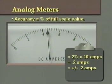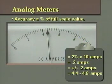For our reading of 4.6 then, the actual value could be between 4.4 and 4.8 amps. Since the accuracy of this analog meter is based on a percentage of the full-scale value, the variation of plus or minus 0.2 amps must be calculated for readings anywhere on the scale.